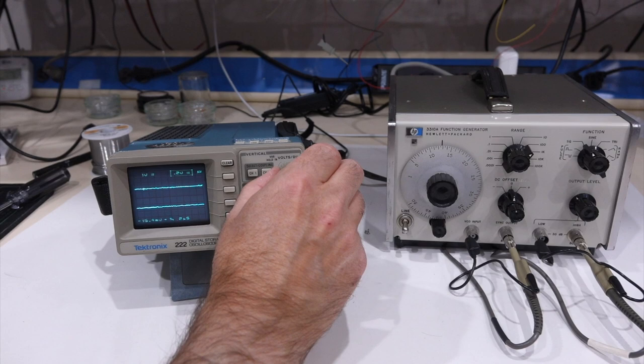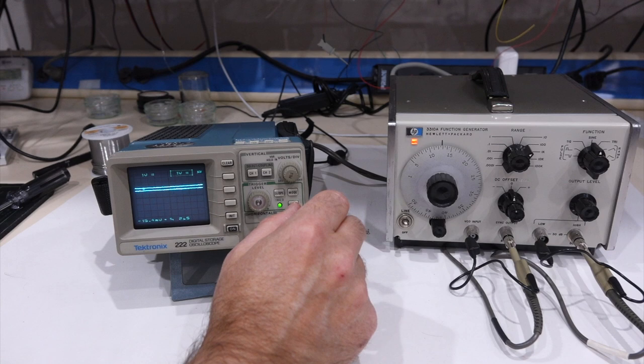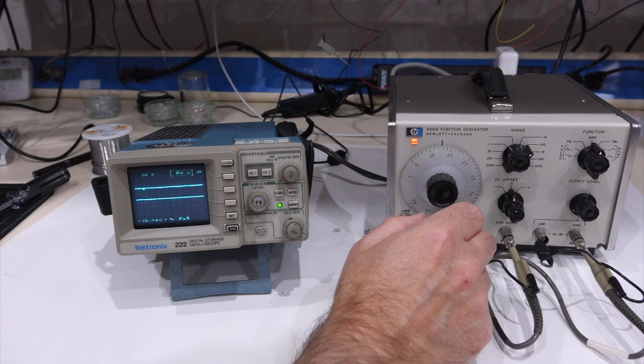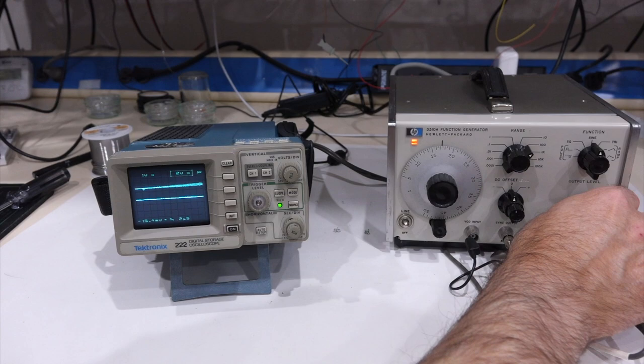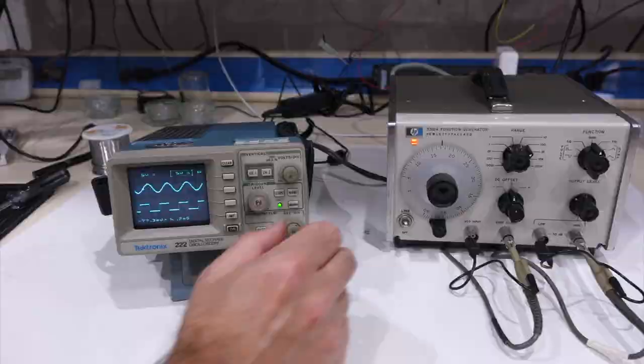Let's see if we can get any signal on it. One volt per division. Let's try our waveform generators. What did we get? I got nothing. Here we go, because we're going too fast. There we go. And here we have it.